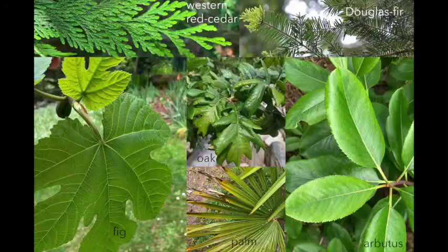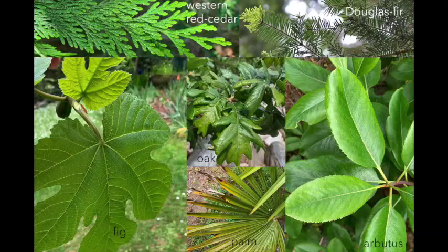What shape are the leaves of the tree? Are they big or little? And are they long or wide? Are the edges smooth, or do they have little teeth on them?